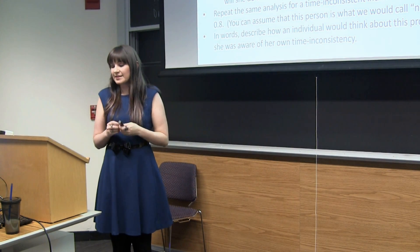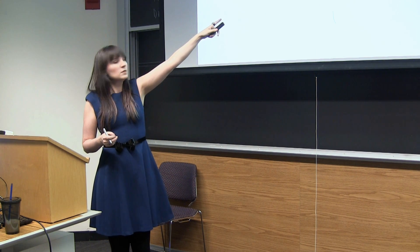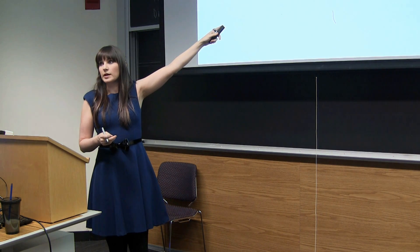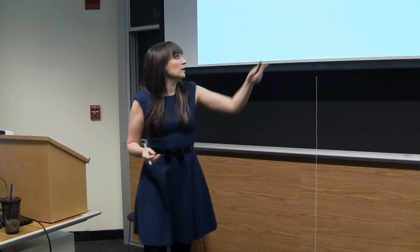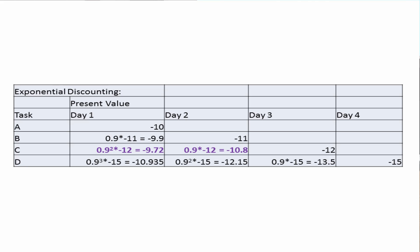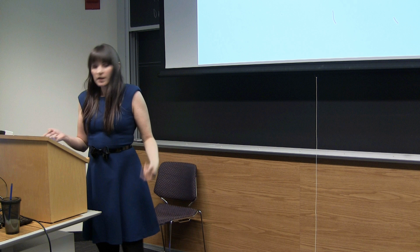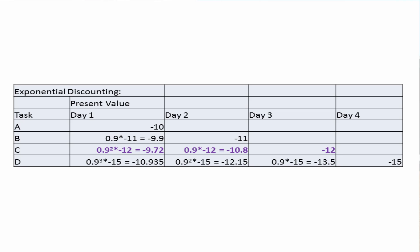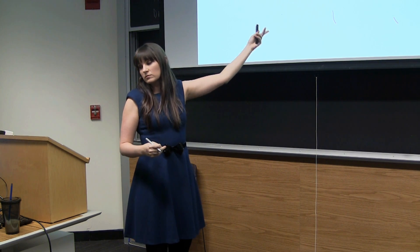When it comes time to complete the task on day three, we calculate present values again. Task C is now not discounted, and task D is discounted by one factor: δ × (−15). It still looks like task C is the best. This is exactly what we mean by time consistency — regardless of when you made the plan, whatever is optimal at the point of planning will also be optimal as you move forward. There will be no changing your mind, unless there's an actual external change in the world altering the underlying utilities.